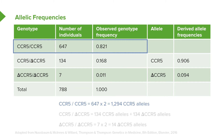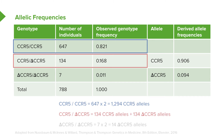Moving on to the next genotype alternative: the heterozygote has one wild-type allele and one mutant allele. So with 134 individuals, that means there are 134 wild-type alleles and 134 mutant-type alleles. We're just tabulating the totals here.